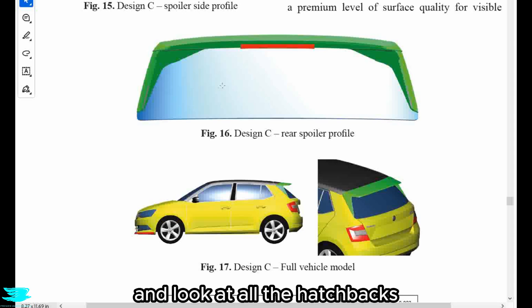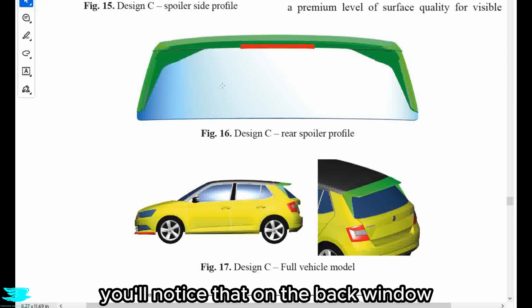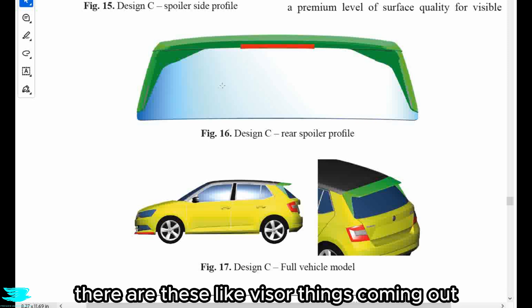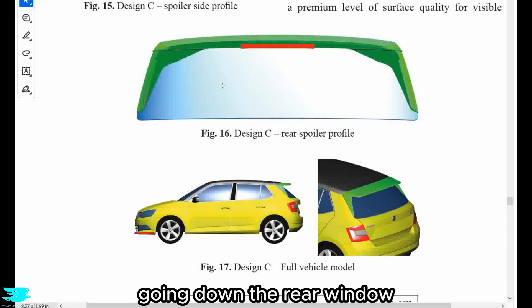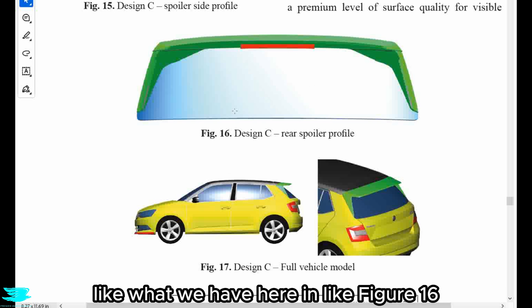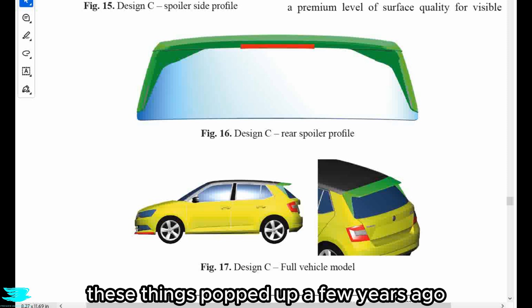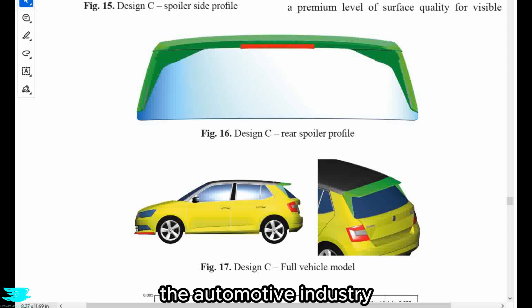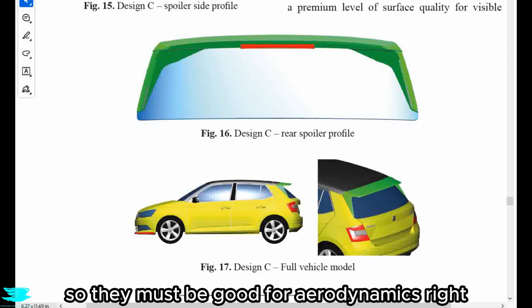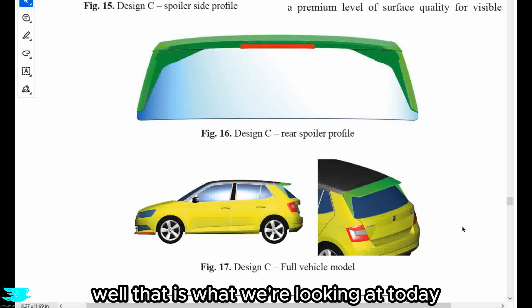If you go outside right now and look at all the hatchbacks and even four-wheel drives driving by, you'll notice that on the back window there are these visor things coming out—one on the top and then one on each side going down the rear window, like what we have here in figure 16. These things popped up a few years ago and were adopted incredibly quickly throughout the automotive industry, so they must be good for aerodynamics, right? Well, that is what we're looking at today.